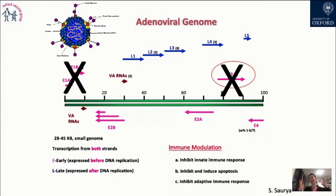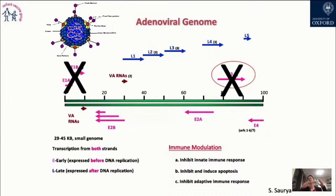To use the adenovirus as a vaccine platform, we genetically modify the genome by deleting two early proteins, E1 and E3 — though you can get away with only deleting E1. What the Jenner Institute created is a recombinant adenovirus genome with E1 deleted, making it replication-deficient. The virus can still infect a cell, but cannot produce early proteins, cannot replicate, cannot produce late proteins, cannot produce new virions, and cannot cause a subsequent infection.